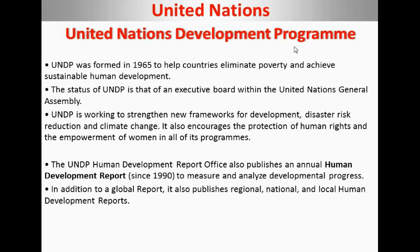UNDP works to complete sustainable development goals for countries like India, USA, Pakistan, China, Nepal, Bhutan, and other small nations, so they can increase their development targets. The most important report published by UNDP is the Human Development Report, first published in 1990, which tells us how countries rank in human development.